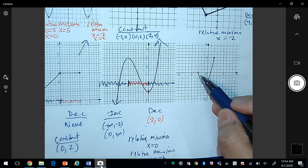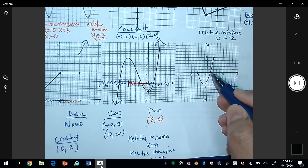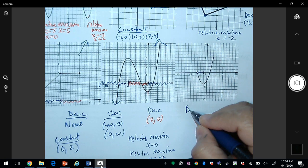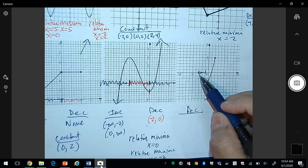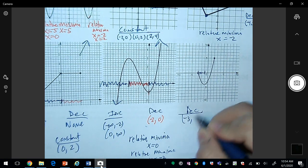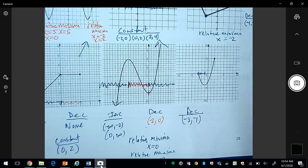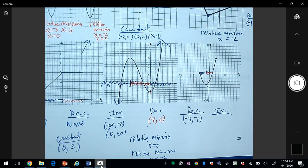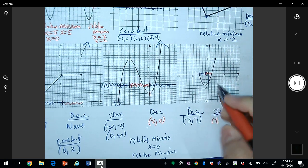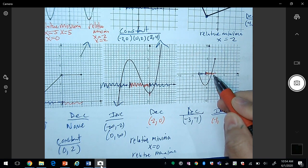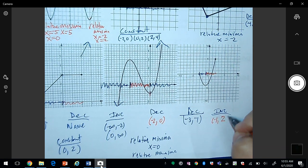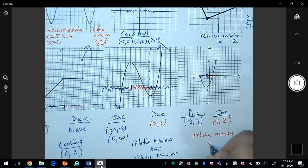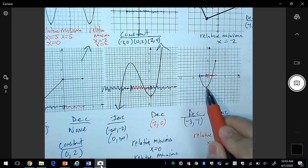The last interval example: the graph is decreasing from -3 to -1, then increasing from -1 to 2. There is a relative minimum at x = -1.